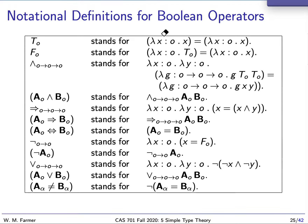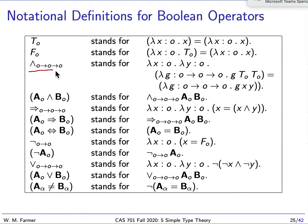So that's how we define the truth value true. The way we define the truth value false is we have another equation which says that the constant Boolean function that always returns true equals the identity function. Well, of course, that's false. And then we go and define all the other familiar Boolean operators: conjunction, implication, negation, and disjunction.